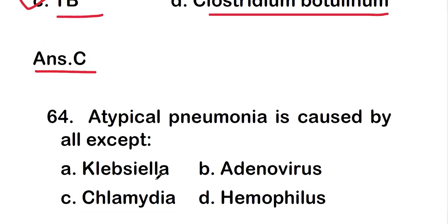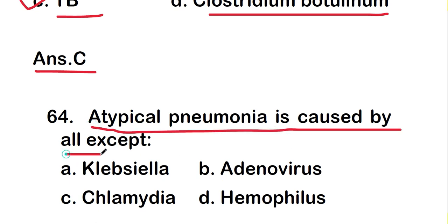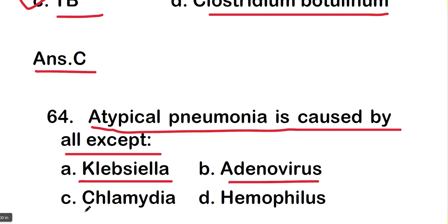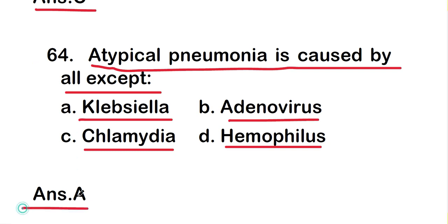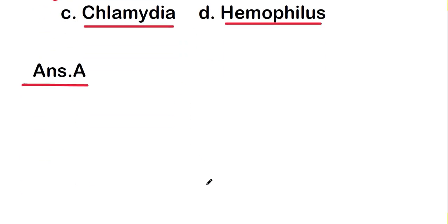The next question is: atypical pneumonia is caused by all except — Klebsiella, adenovirus, Chlamydia, or Haemophilus? The right answer is option A, that is Klebsiella. Atypical pneumonia is not caused by Klebsiella.